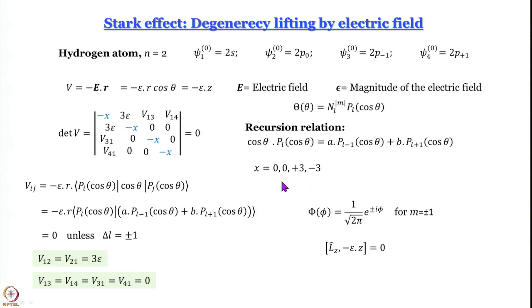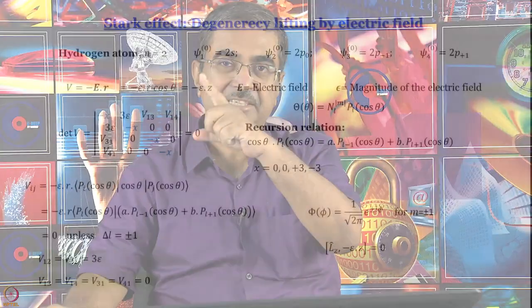If x = 0 the energy does not change. So two of the four orbitals do not change in energy, one is stabilized, and one is destabilized. The orbital whose angular momentum is aligned with the electric field gets stabilized, the one not aligned gets destabilized — corresponding to the m = +1 and m = −1 states.